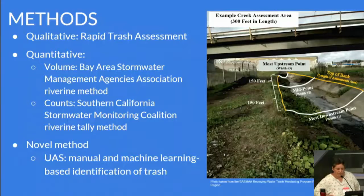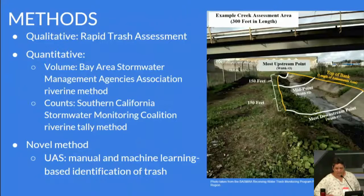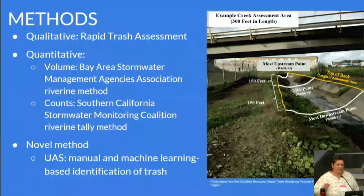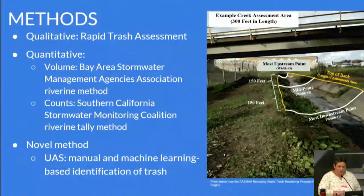Both groups have also been doing what we call the rapid trash assessment, refined by the Bay Area group. It asks: is there a small amount of trash, low amounts, moderate amounts, or high amounts? It involves walking that stretch of stream and giving it a score from 1 to 12 based on how much trash is perceived by the person doing the assessment, with 1 being the least amount and 12 being the most.